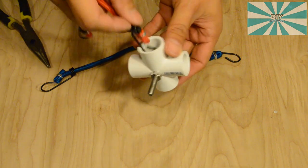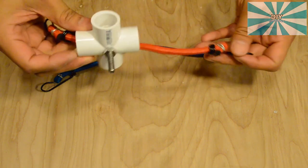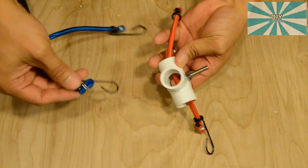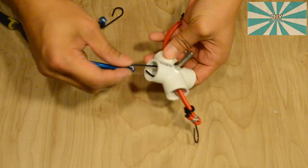Next, insert one of the bungees through the cross tee and then insert the second bungee perpendicular to the first bungee. I found it easier to go below the first bungee.